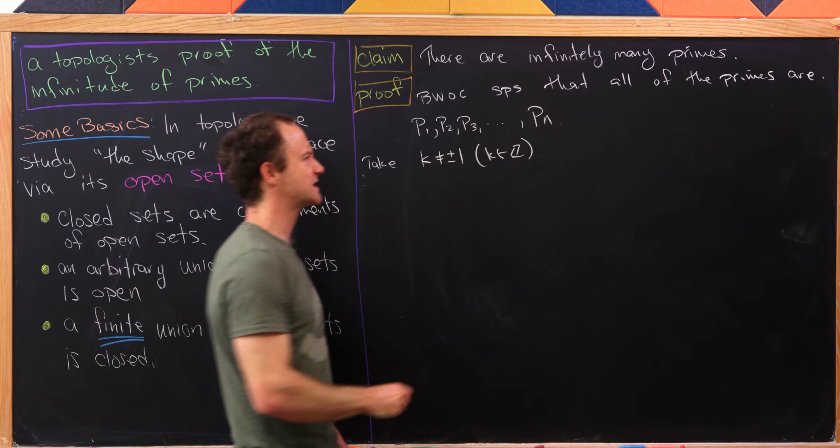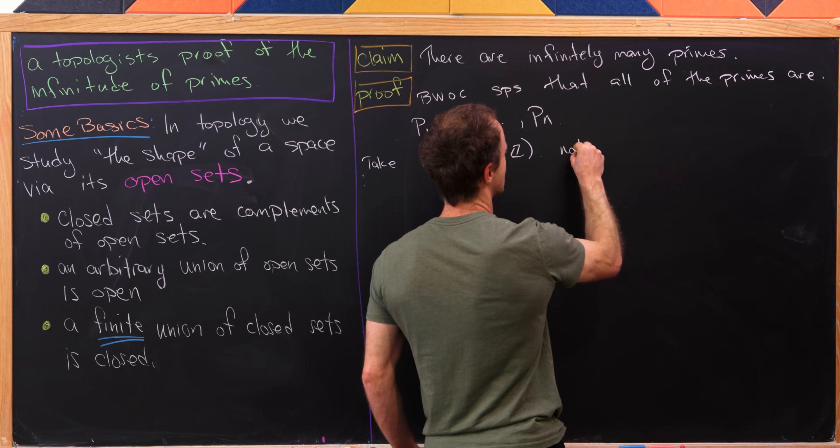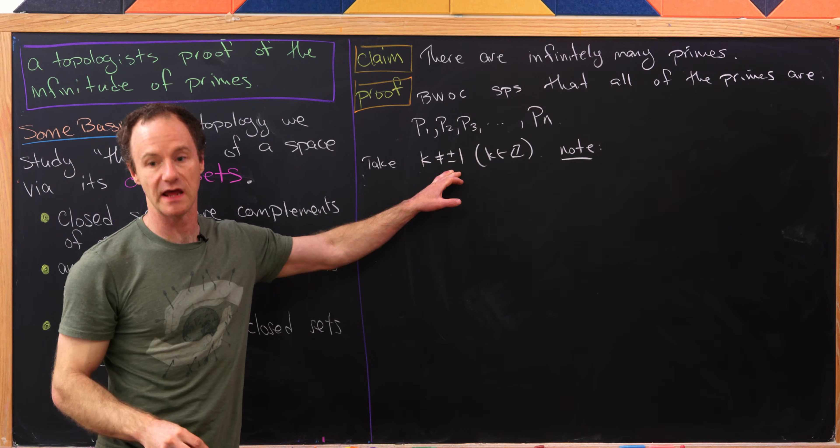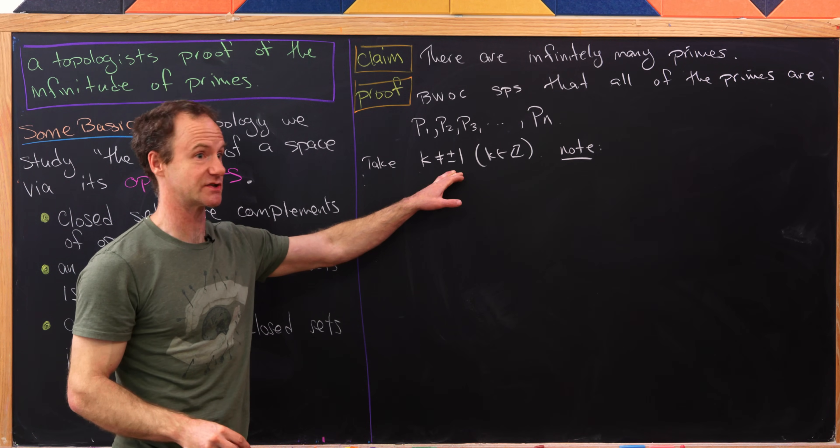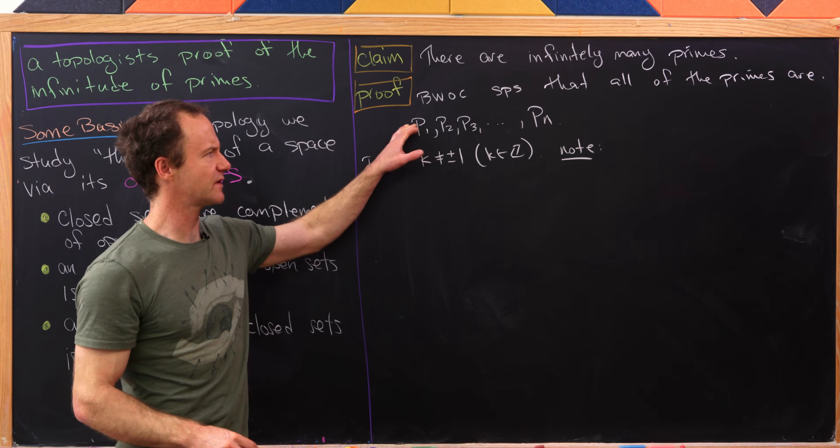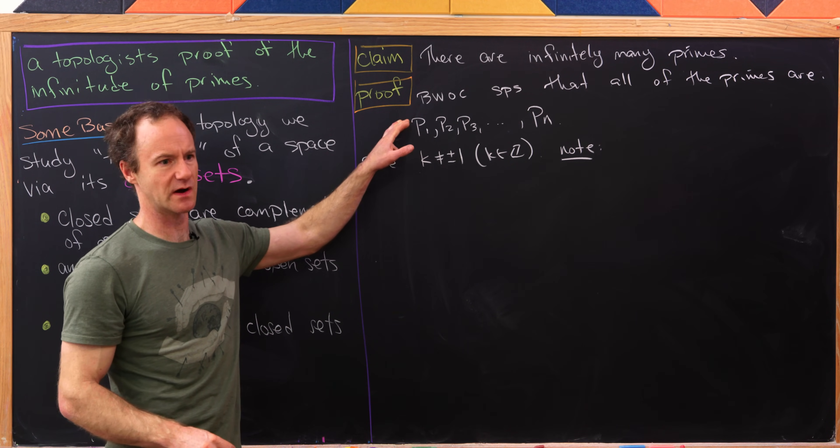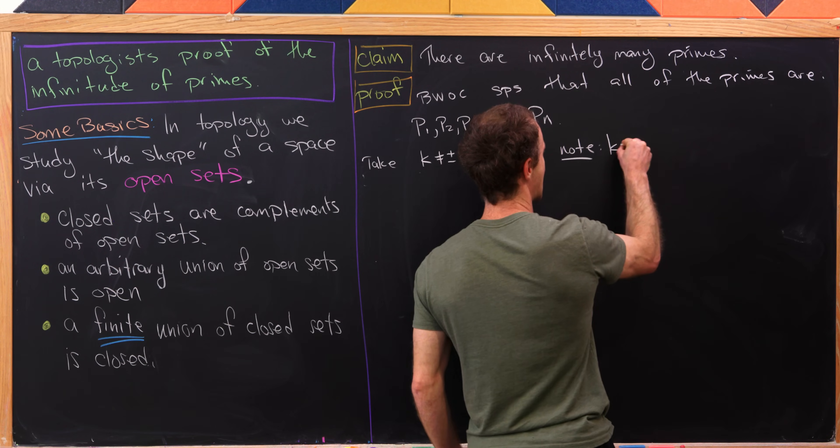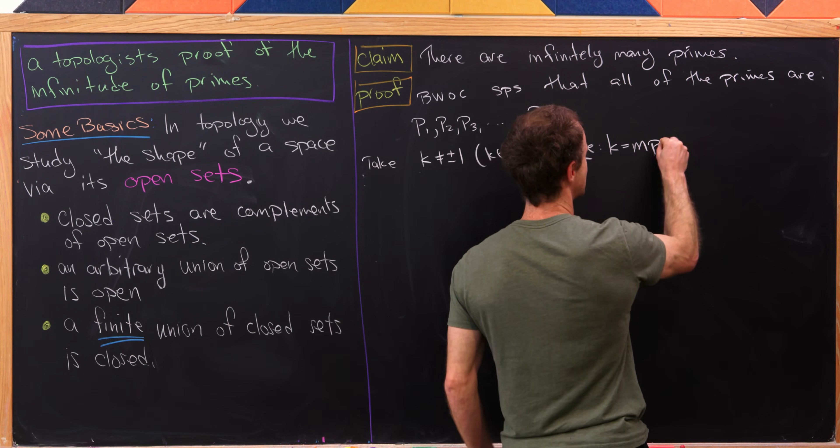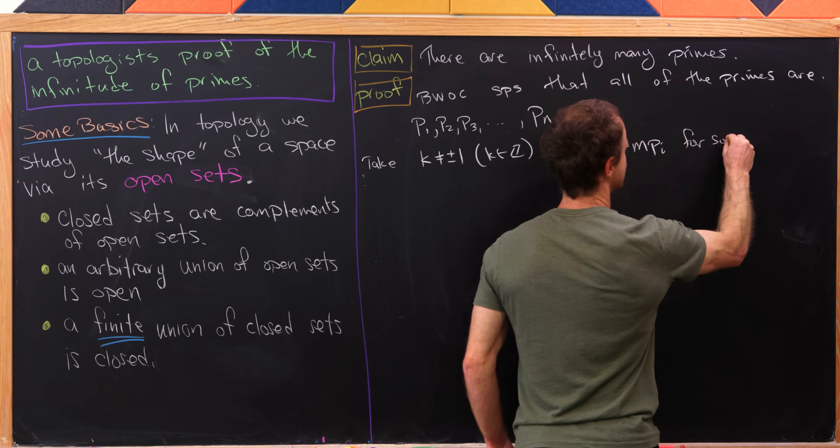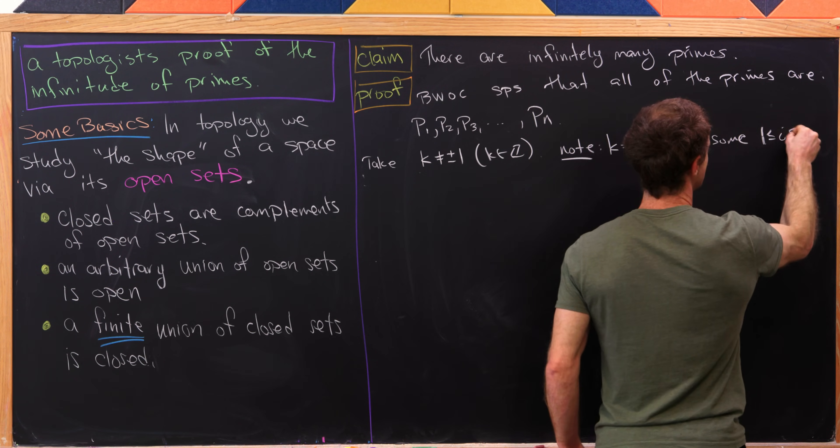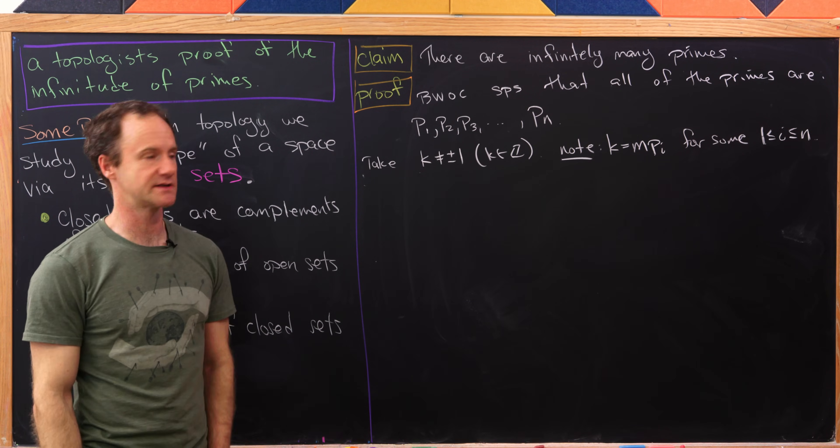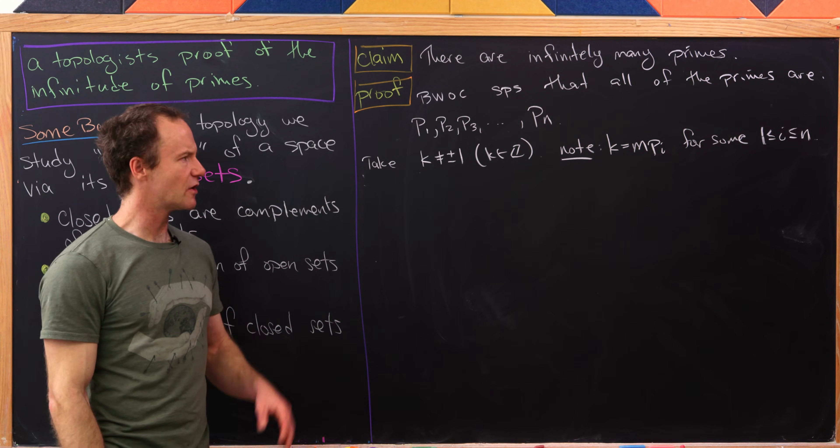And let's notice the following. So note that since k is not plus or minus one, it must have a prime factor. But since we've only got finitely many prime factors, well, it's one of these prime factors. So in other words, we can write k as m times pi for some i between 0 and n. Okay, great. So now, where do we go from here?